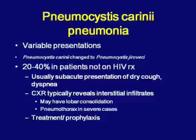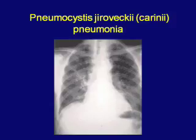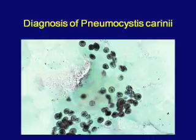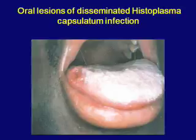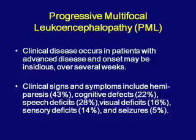PML — progressive multifocal leukoencephalopathy — occurs in patients with advanced AIDS. Clinical signs include hemiparesis, cognitive defects, speech deficits, visual deficits, sensory deficits, and seizures. The clinical hallmark is a focal neurological deficit with white matter disease, no mass effect, and lesions that do not enhance on imaging. PML is caused by the JC virus, a polyomavirus.